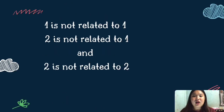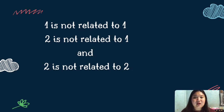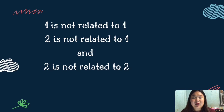On the other hand, masasabi natin ang x ay hindi related sa y kung hindi nasusunod yung condition. For example, one is not related to one, two is not related to one, and two is not related to two. Ito ay dahil x is not less than y.